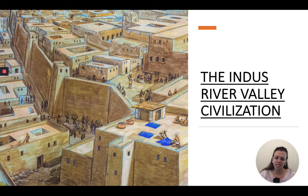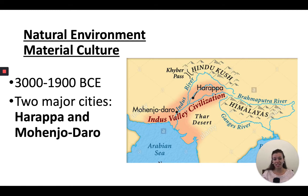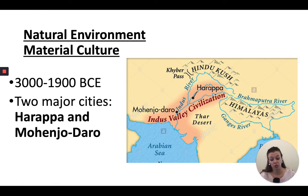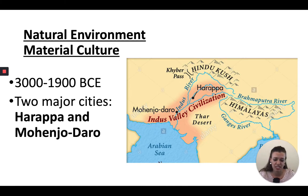Almost done, guys. The Indus River Valley — we are barely going to spend any time on it because we don't know much about it. The Indus River Valley civilization is by the Indus River, so think western India and Pakistan. It's going to emerge between 3000 and 1900 BCE. We know that there are two huge cities — Harappa and Mohenjo-Daro — but we don't know a lot. We don't know what gave rise to urbanization, what caused the population increase, or what kind of technological advances they had.